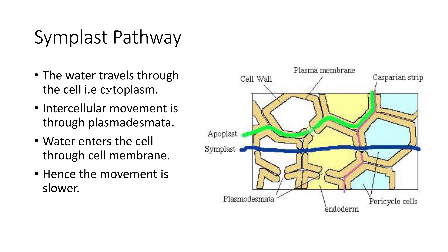In the symplast pathway, the water travels through the cell, that is, the cytoplasm. Intercellular movement is through plasmodesmata, which are microscopic channels or bridges between the cells. In the symplast pathway, water enters the cells through the cell membrane, hence the movement is slower. The blue color in the picture shows the symplast pathway — water moves through the cell membrane, cytoplasm, and plasmodesmata. We have learnt two types of pathways: apoplast and symplast.